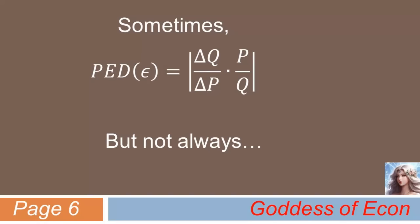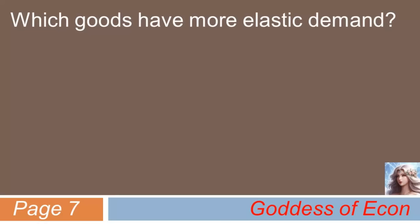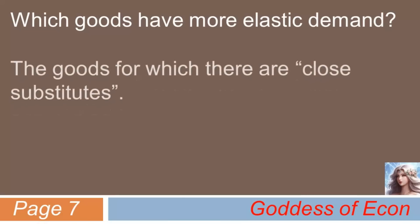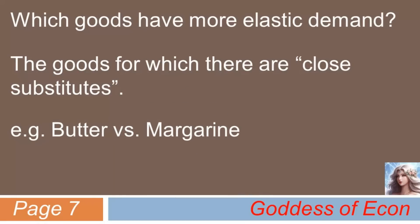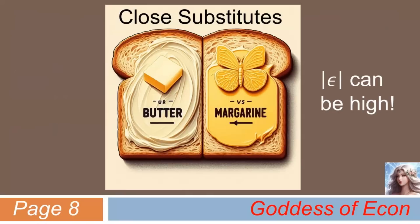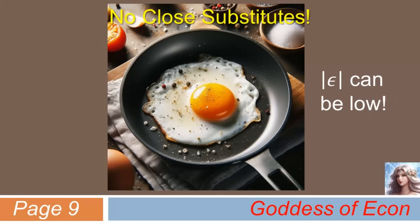Which goods have more elastic demand? Naturally, those goods that have close substitutes in the market should be more price elastic than those that do not. As the price of a good goes up, people can very easily substitute away from that good and choose to consume its close substitute instead. One such example would be butter and margarine. Given that they are close substitutes, the absolute value of the PED for both is relatively high. By contrast, there is no close substitute for eggs, which tends to make demand for eggs relatively price inelastic.